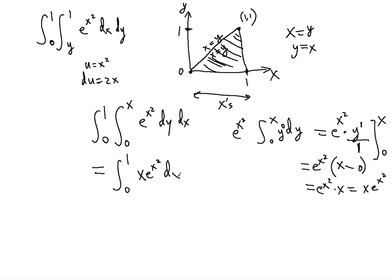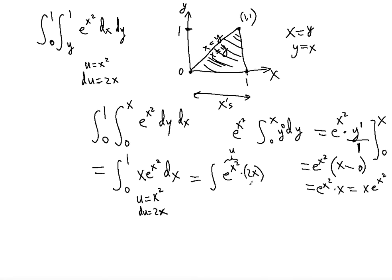We now have the single integral from 0 to 1 of x·e^(x²) dx. We can use substitution: let u = x², so du = 2x dx. The limits for u are the same as for x — when x = 0, u = 0; when x = 1, u = 1 — so the limits remain 0 to 1.